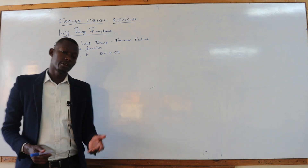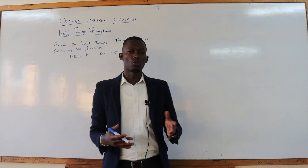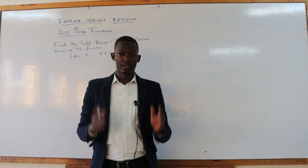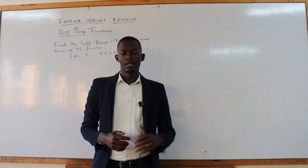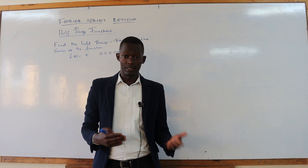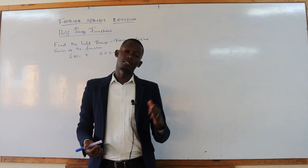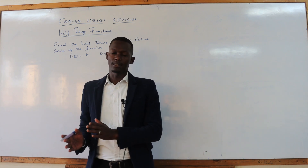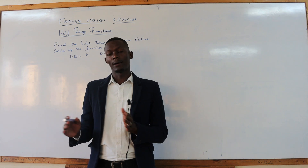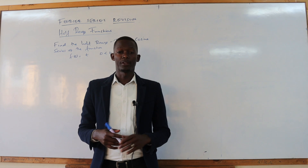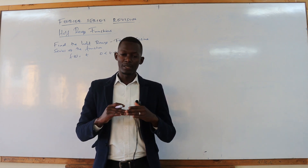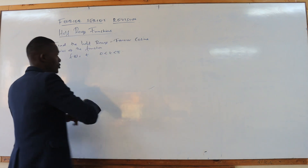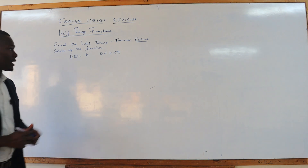When you are given a half range series, it can always be expanded to be an odd function or it can also be expanded to become an even function. In questions about half range series, they are always specified — is it a cosine series or is it a sine series? If it is a cosine series, that is particularly for an even function. If it is a sine series, that belongs to an odd function. In this particular question, you've been told it is a cosine series, and a cosine series is an even function.